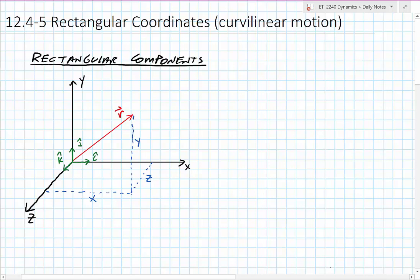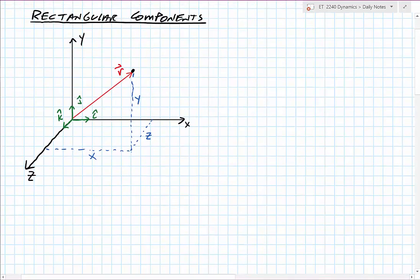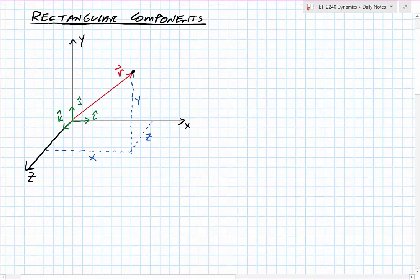I've already drawn the rectangular coordinate system here, and we can see that we have some point out here, whatever that point might be. We have some radial vector r, so we have to define some things. The first being the position of that point and the position of that point in relationship to this radial vector.